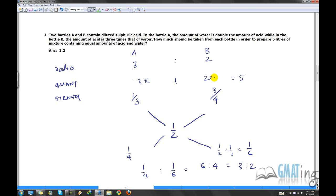So 3x and 2x will give you 5. So x is basically 1 here. So just by coincidence it comes out to be 3 is to 2. So this is 3 liters and 2 liters or gallons or whatever it is. So 3 liters and 2 liters.